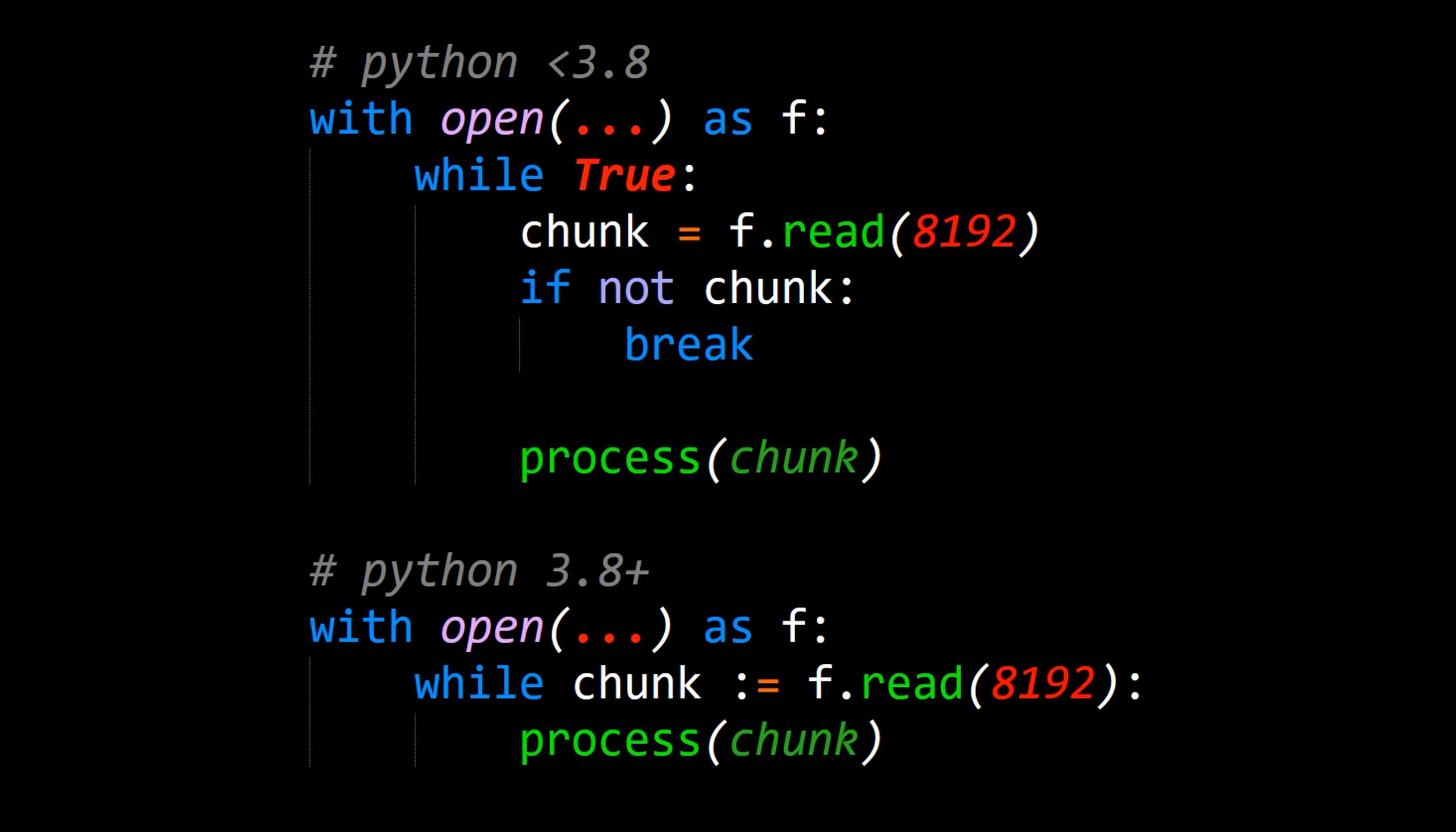In Python 3.8, this gets compressed into a single line that performs the read operation, the assignment of the fetched data to the variable chunk, and then the conditional check in the while loop of whether a chunk returned any data or if the end of the file was reached. To me, this is elegant.